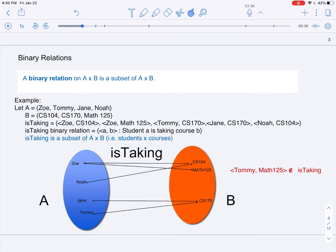So the is-taking binary relation is the set of ordered pairs A, B, such that A is a student taking course B. And as we mentioned, it is a subset of the Cartesian product of A and B.